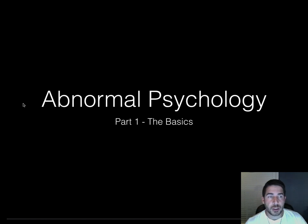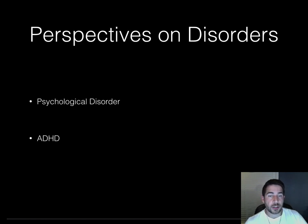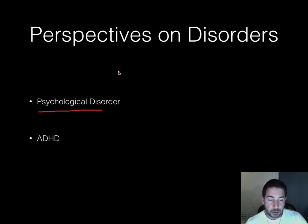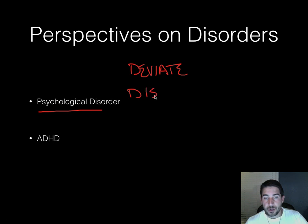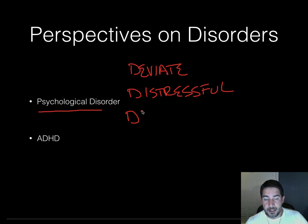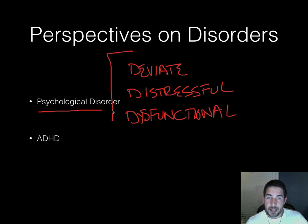Welcome to Abnormal Psychology Part 1. We're going to talk about the basics of what a psychological disorder is today. Starting off with the definition: a psychological disorder requires three things to be present. It has to be behavior that is deviant, distressful, and dysfunctional. So these three things have to be there.